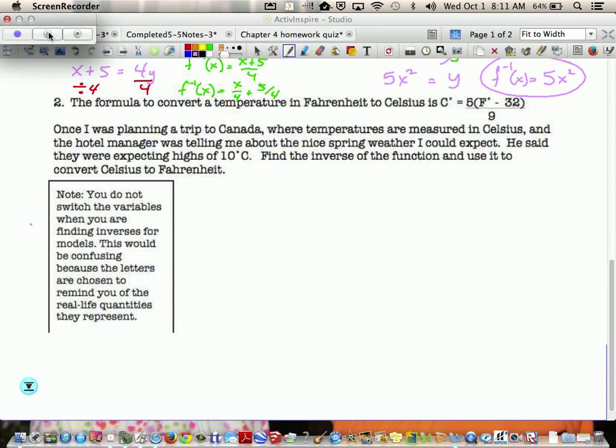So this next problem says the formula to convert a temperature in Fahrenheit to Celsius is given by Celsius equals 5 times the Fahrenheit temp minus 32 all divided by 9. Once I was planning a trip to Canada where temperatures are measured in Celsius and the hotel manager was telling me about the nice spring weather I could expect. He said they're expecting highs of 10 degrees Celsius. Find the inverse of the function and use it to convert the Celsius to Fahrenheit. So they're giving me a Celsius temperature. We're going to find the inverse first.